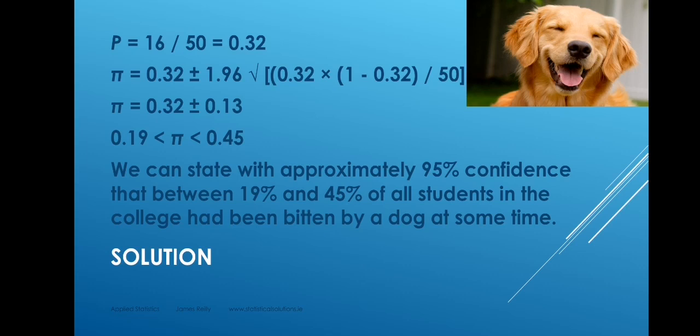So we can say that pi, the population proportion, lies inside that interval. In words: we can state with approximately 95% confidence that between 19% and 45% of all students in the college had been bitten by a dog at some time. Again, notice that we're referring to the population that we studied and the particular attribute of interest. You can read more about this and attempt some problems by going to the textbook, section 4b.